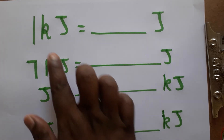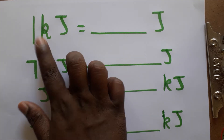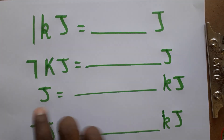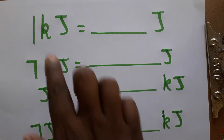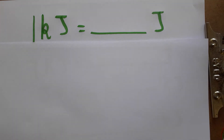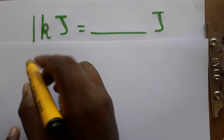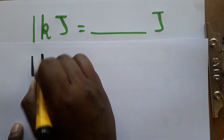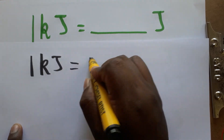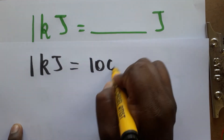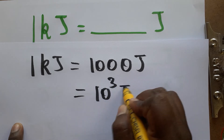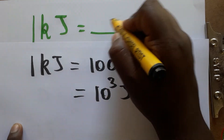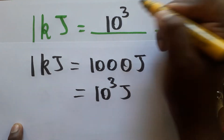Today we are going to learn how to convert from kilojoules to joules and joules to kilojoules. First, we will see how to convert kilojoules to joules. 'Kilo' is a prefix word meaning one thousand, so one kilojoule is one thousand joules — or we can write it as 10 power 3 joules.